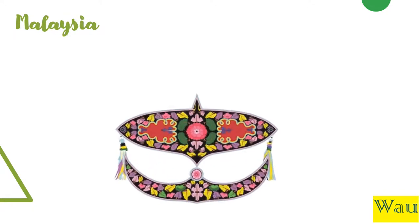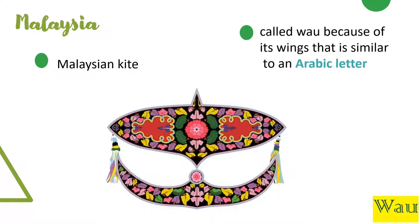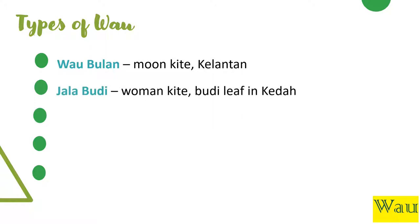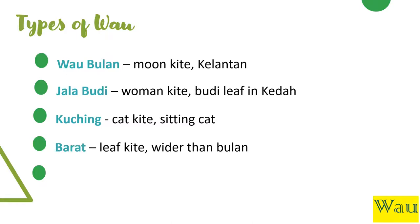Wao is a Malay term for kite. It's called wao because of its wings that are similar to an Arabic letter. There are five different types of wao. Wao bulan is also known as the moon kite because of its crescent shape and it looks like a moon in the sky; it is from the state of Kelantan. Jadla budi is also known as the woman kite, and its tail is similar to a budi leaf found in Kedah. Kuching means cat kite — when viewed from the back, it looks like a sitting cat. Barat is the same as bulan but wider, and is also called the leaf kite. Lastly, Merak is known as the peacock kite, and is local to the province of Johor.